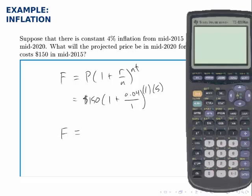So we pull up the calculator and calculate 150 times, in parentheses, 1 plus .04 divided by 1, raised to the 1 times 5, or 5th power. And we find that that $150 item in 2015 is expected to cost about $182.50 in 2020.